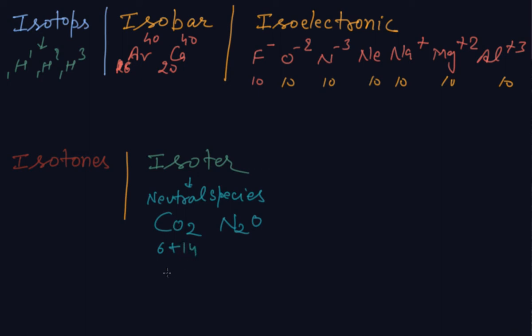In nitrogen 7, it becomes 22. The neutral species which are having the same number of electrons is called isotone.